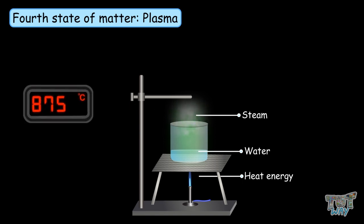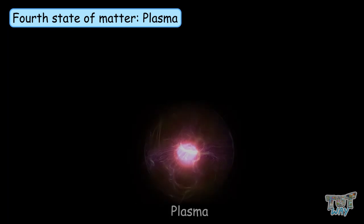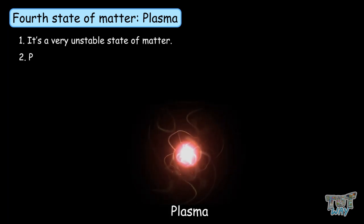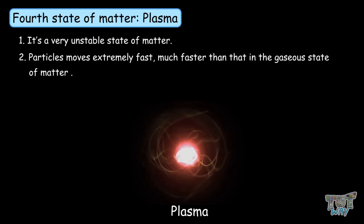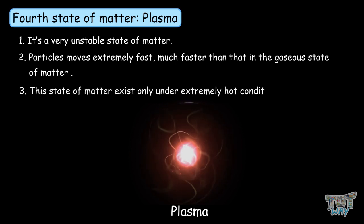If we further heat the gaseous state of matter to unimaginably high temperatures, a new state of matter is formed, and this is called plasma. It is a very unstable state of matter. Particles move extremely fast, much faster than in the gaseous state.